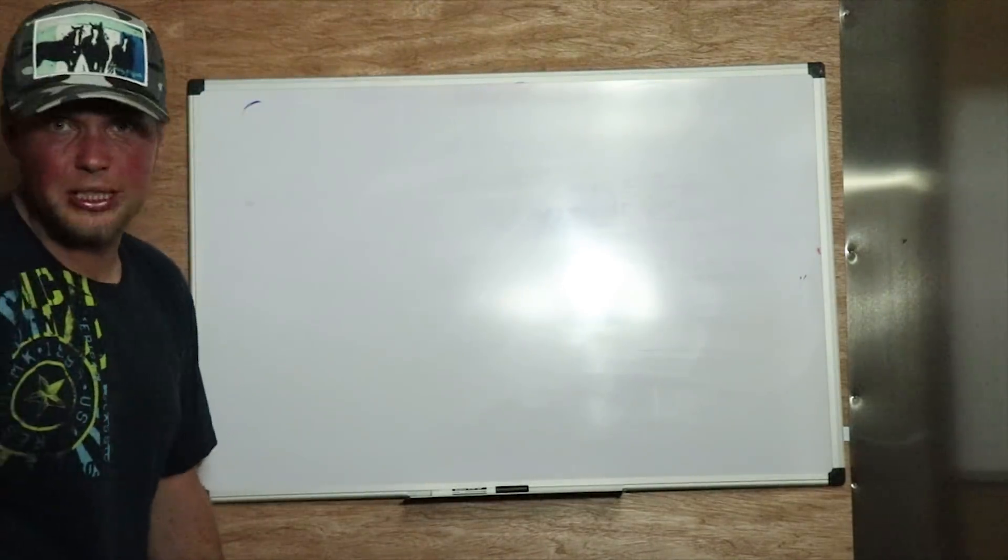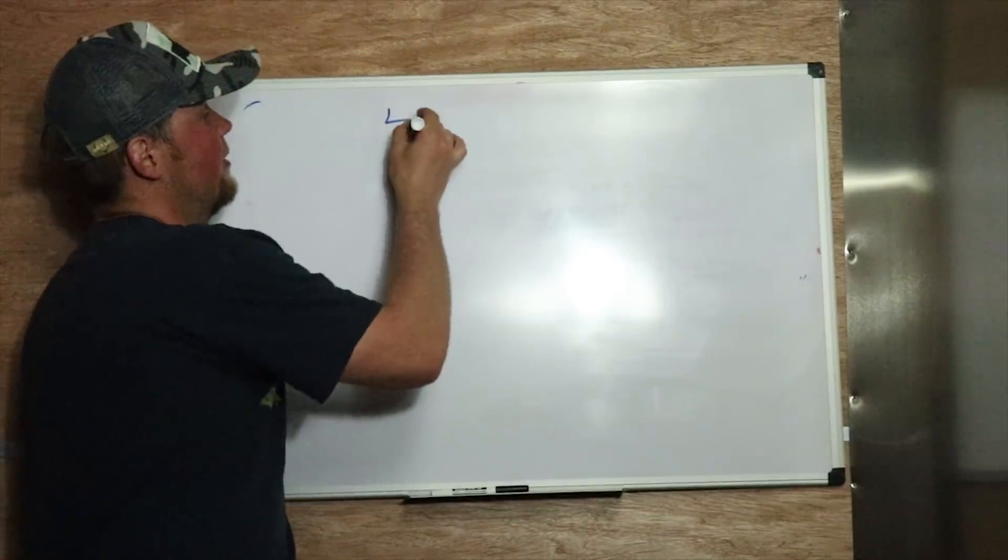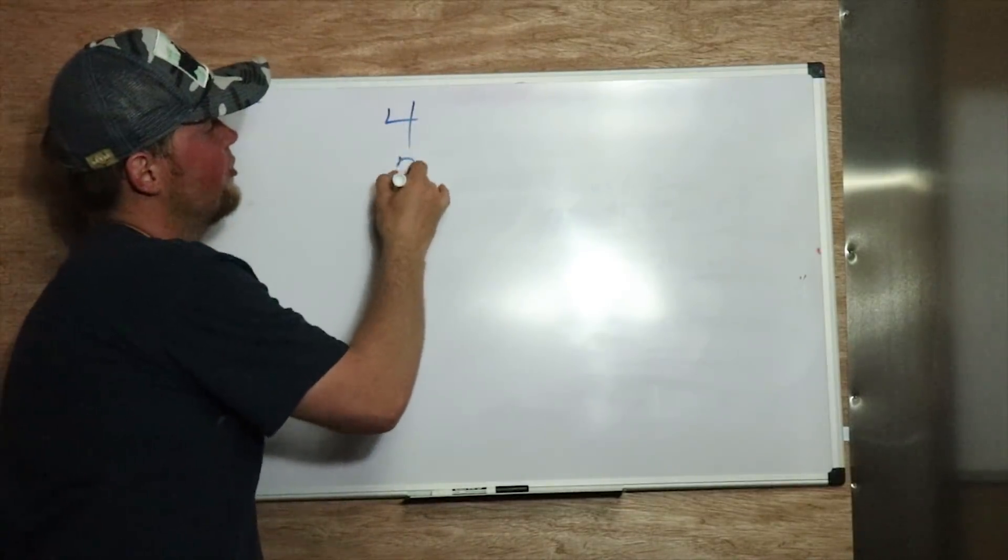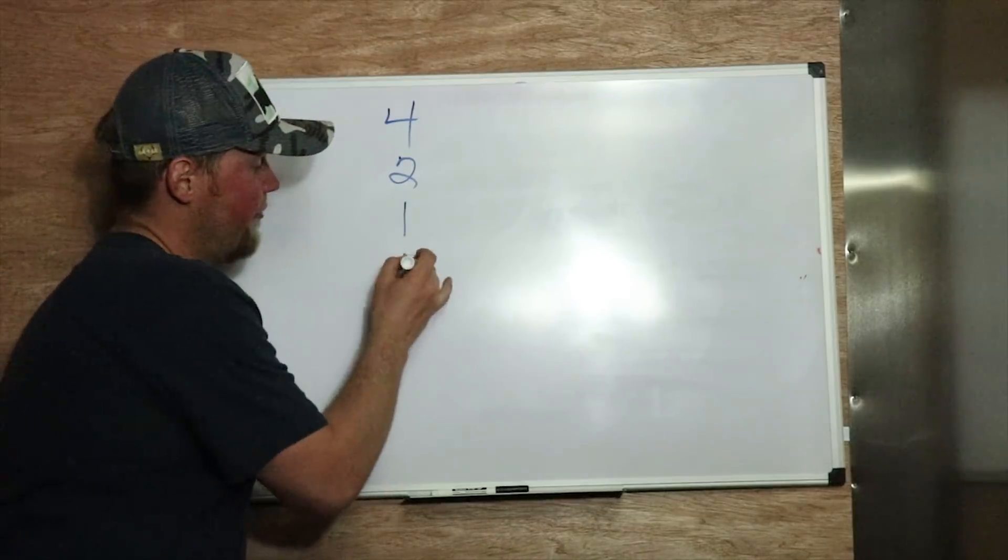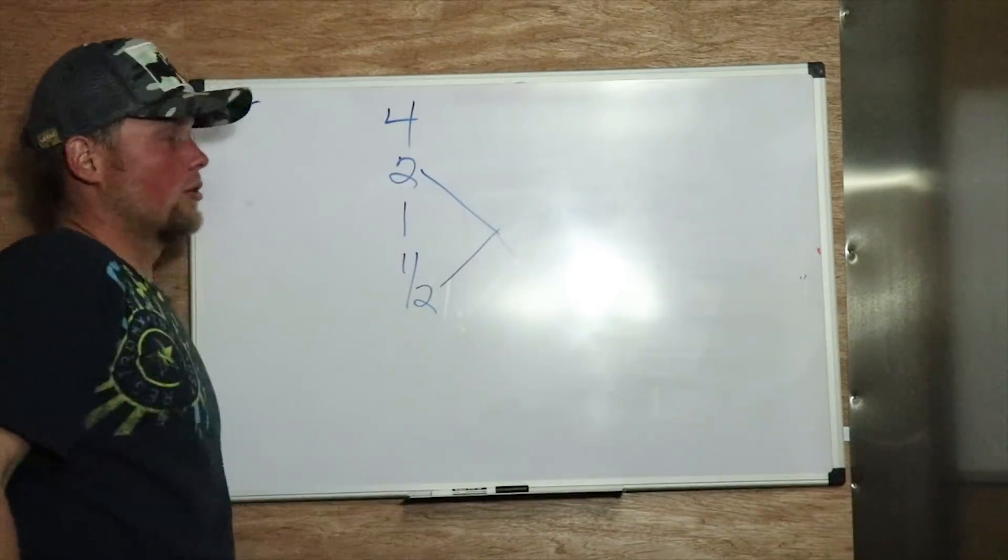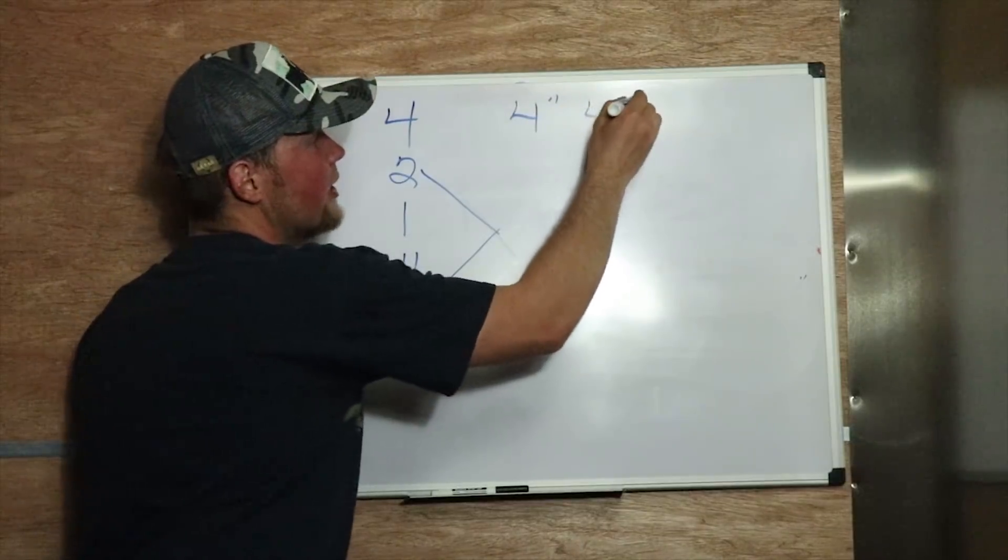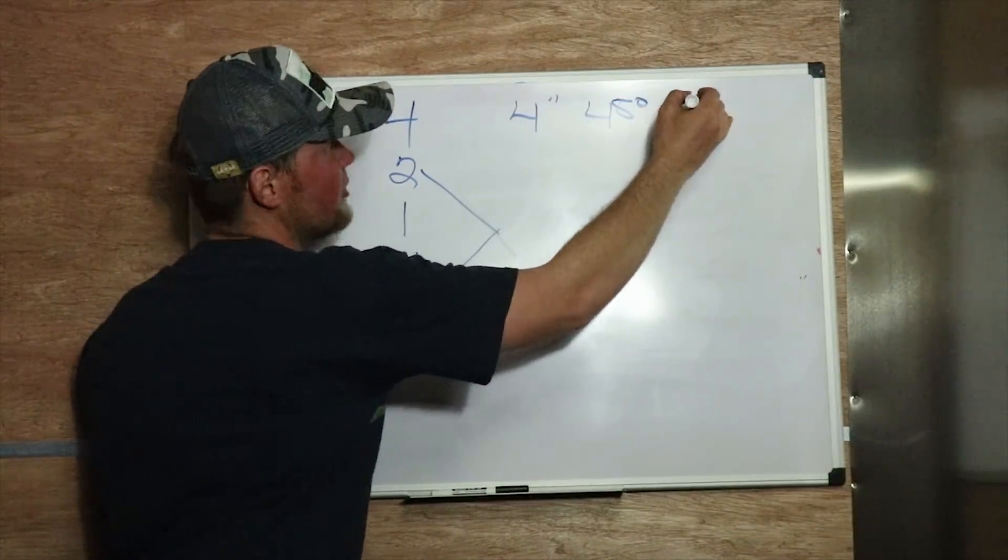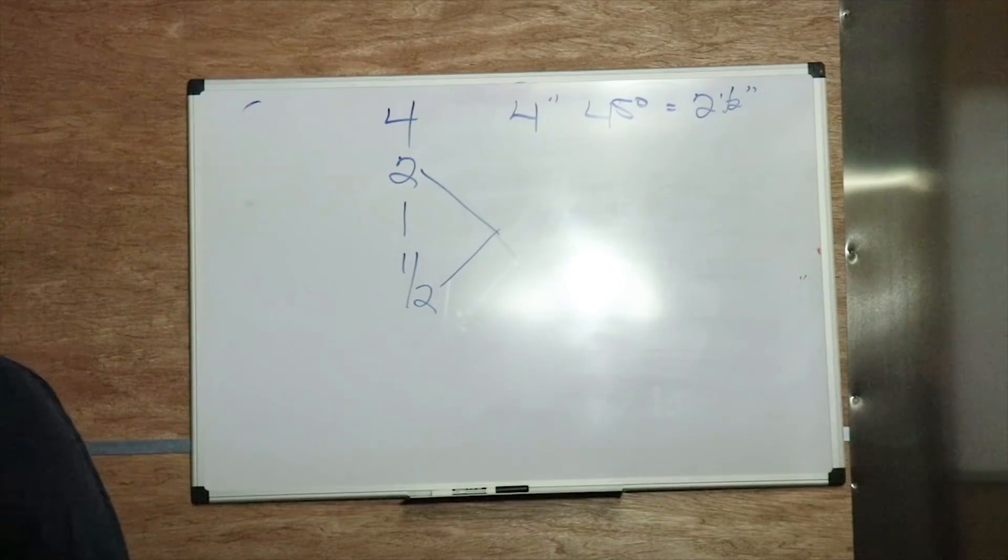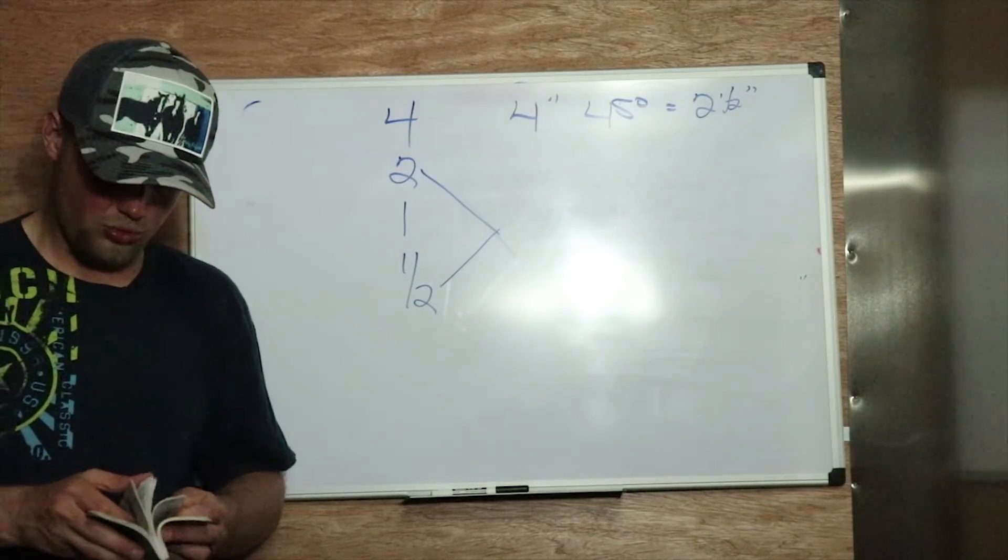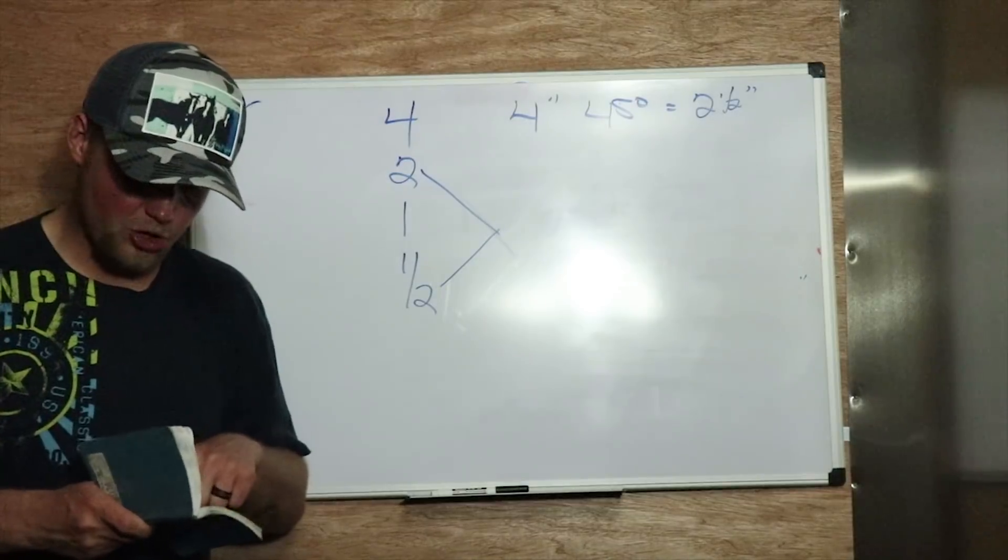So, there is a super simple way to find a 45-degree fitting. Say you have a 4-inch fitting. Take that 4 inches, divide it in half, you got 2. Divide the 2 in half, you have 1. Divide the 1 in half, you have a half inch. On a 4-inch 45-degree offset, the takeoff is 2 and 1/2 inches. Now, we can look that up in the Blue Book as well. A 4-inch takeoff is 2 and a half inches.